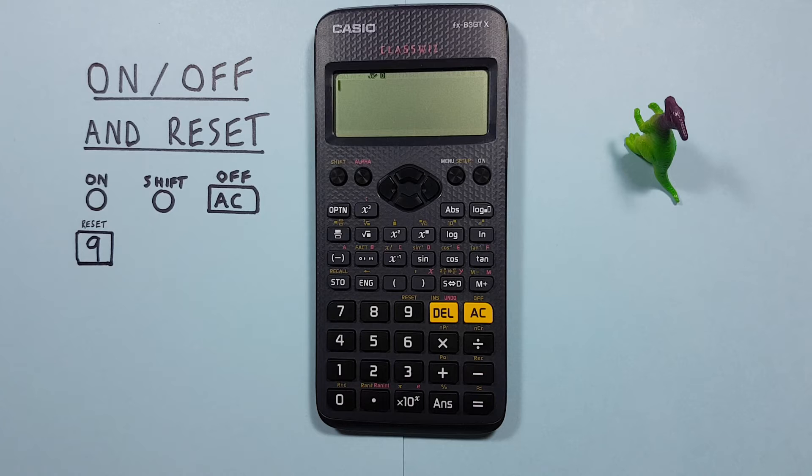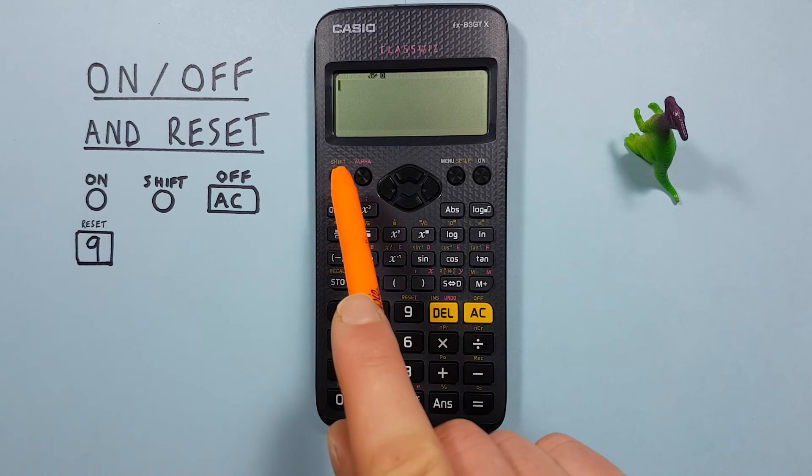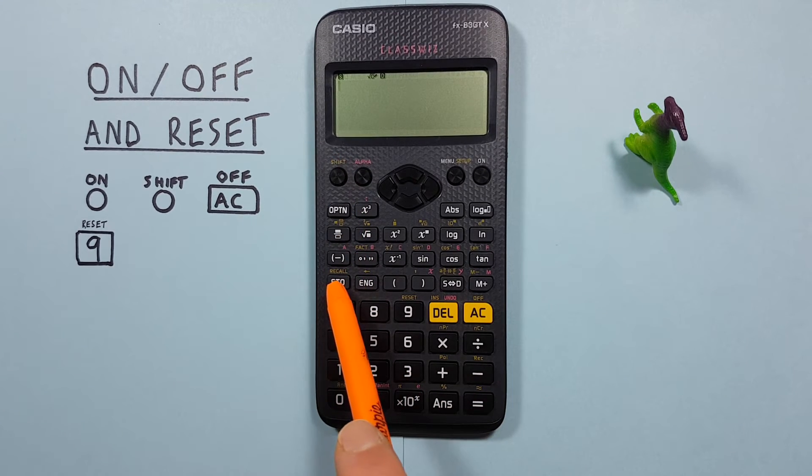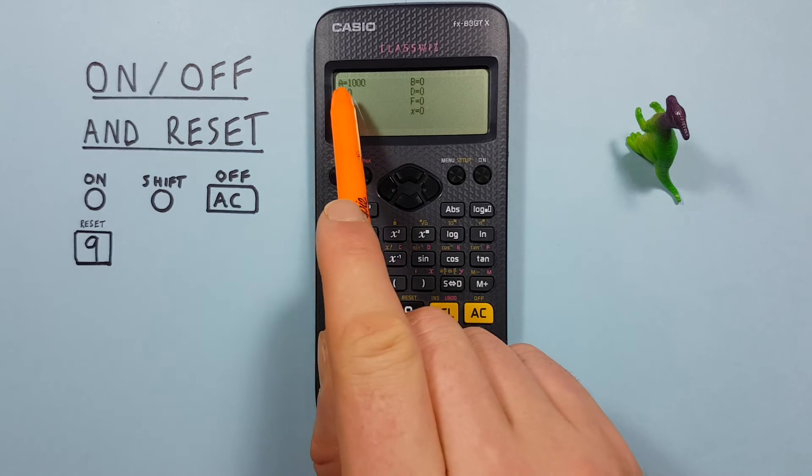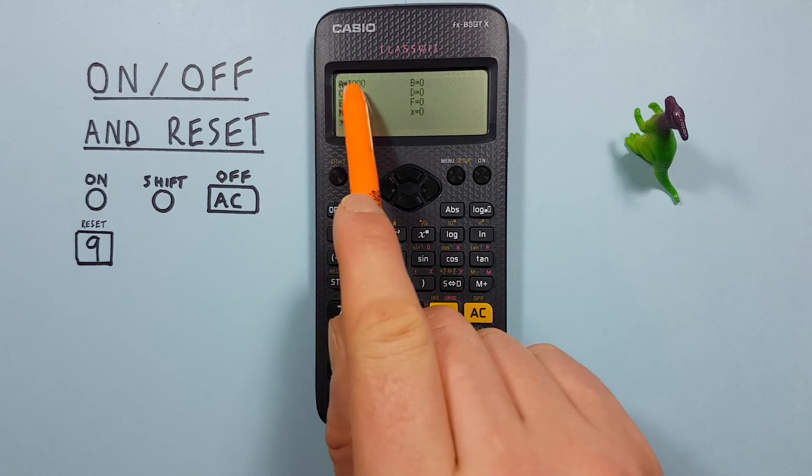The second option is to reset our memory. We can see in this calculator right now, if we look at our recall menu, in the A slot, there's 1,000 stored.